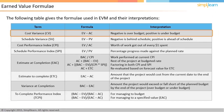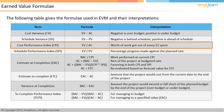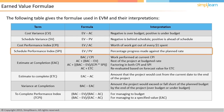In schedule variance, a negative value means the project is behind schedule, whereas a positive value means the project is ahead of schedule. The cost performance index (CPI) and schedule performance index (SPI) values vary between 0 and 1. For example, a CPI of 0.8 implies that 80 cents of work is obtained for every dollar spent. Similarly, an SPI of 0.9 implies that the project is progressing at only 90 percent of the speed originally planned.